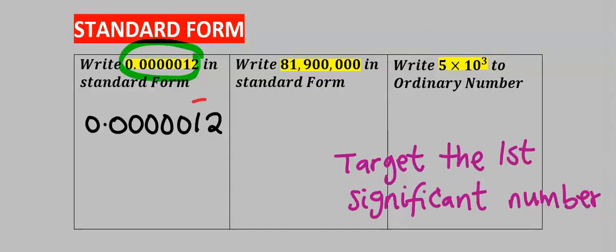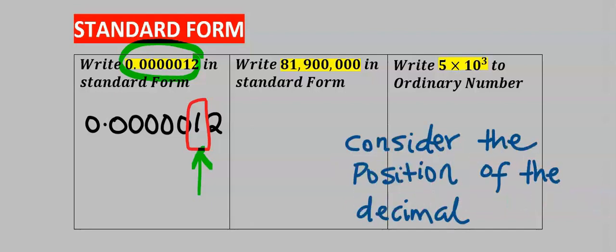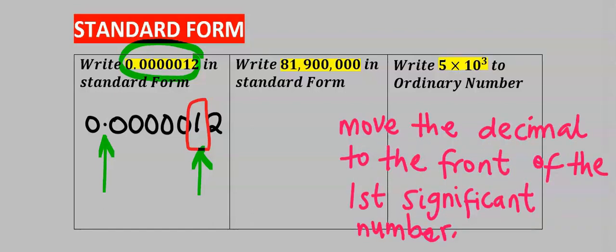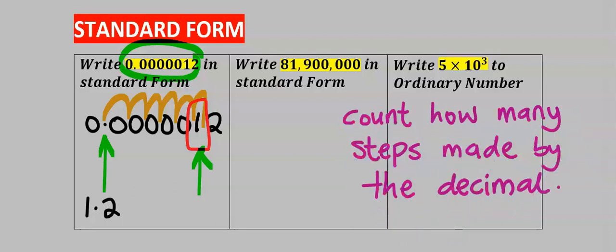Step number one: target the first significant number — here it is one. Step number two: consider the position of the decimal. Step number three: move the decimal to the front of the first significant number. That is one, two, three, four, five, six — and we're going to have 1.2.